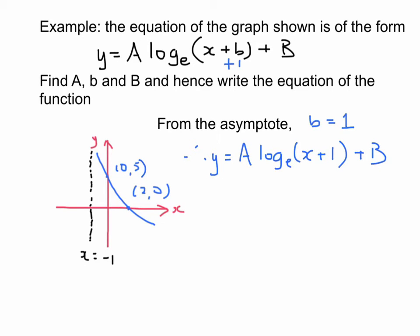Then we use one of these points. I find it easier to use that point first. So we use 0, 5 in the mix, which means we have 5 equaling a times log to the base e of 0 plus 1 plus B.